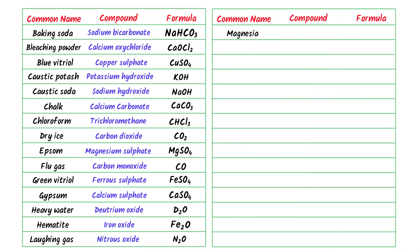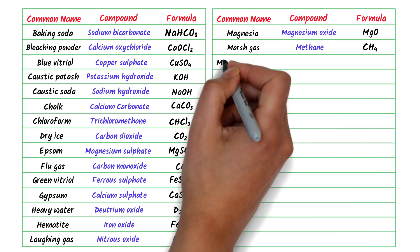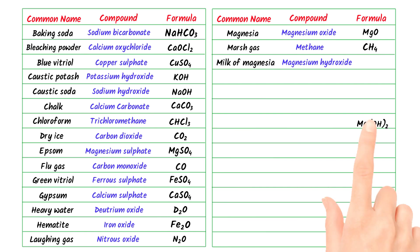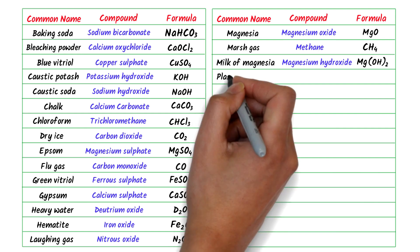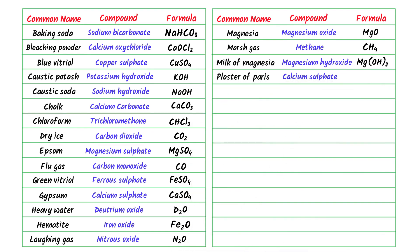The sixteenth is magnesia — it is magnesium oxide and its chemical formula is MgO. The seventeenth is marsh gas — it is methane and its chemical formula is CH4. The eighteenth is milk of magnesia — it is magnesium hydroxide and its chemical formula is Mg(OH)2.